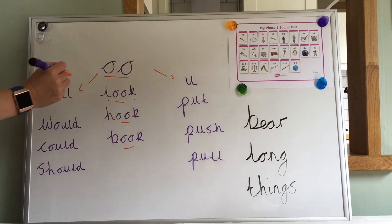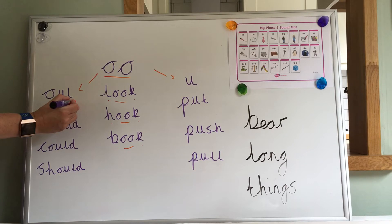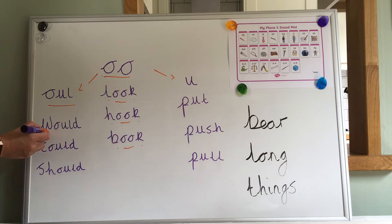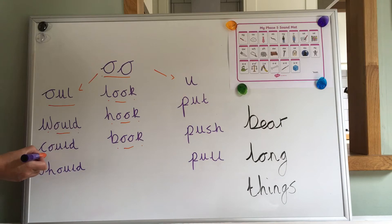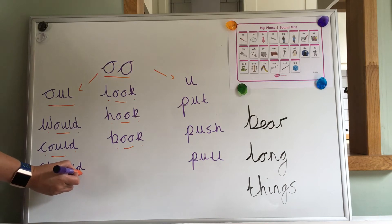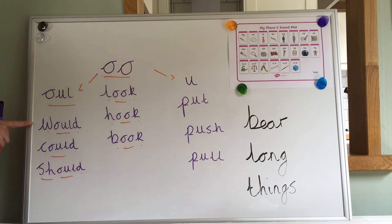We then looked at these letters making the 'u' sound and we found them in these words. Let's find them and add our sound buttons. W-u-d: would. K-u-d: could. Sh-u-d: should. Would, could, and should contain these letters making the 'u' sound.